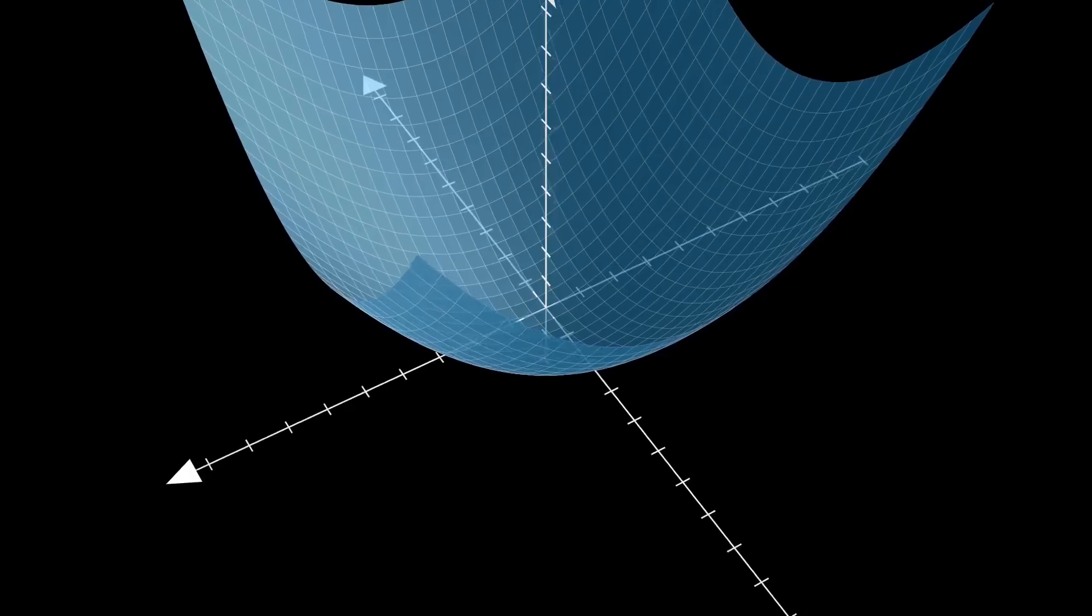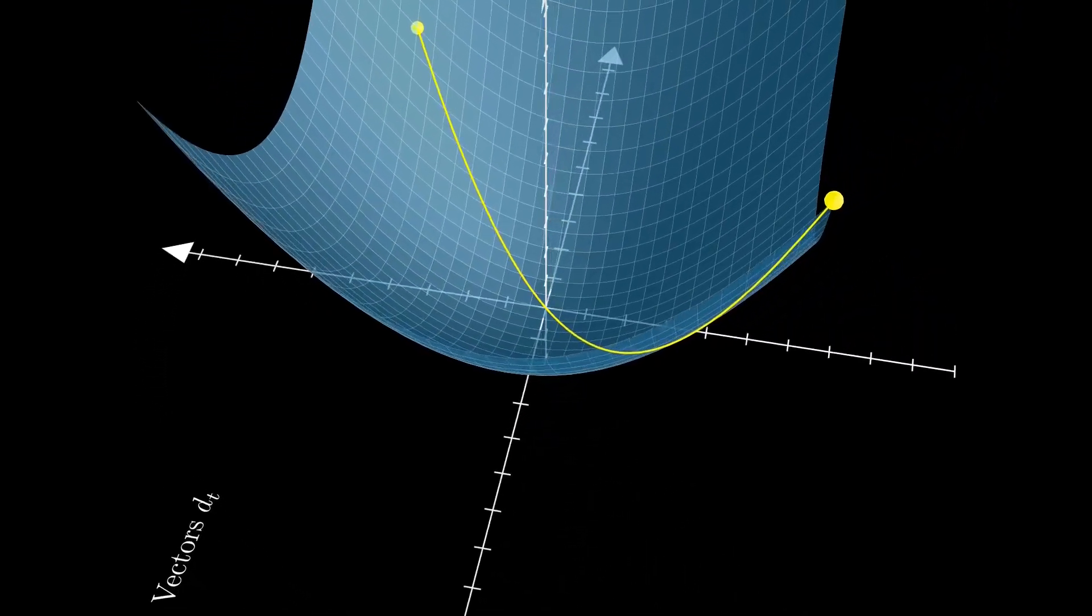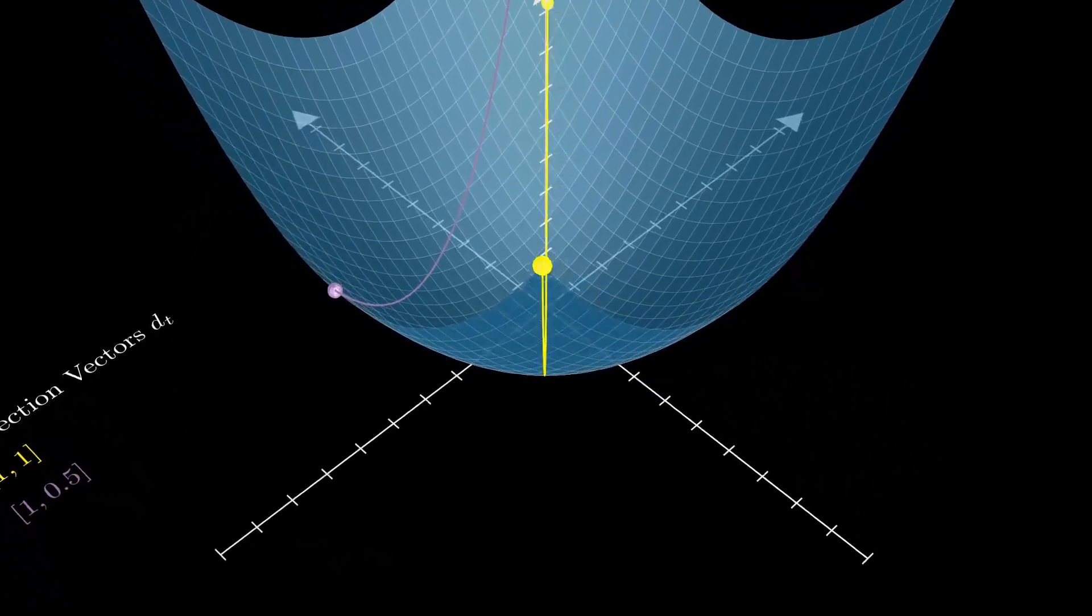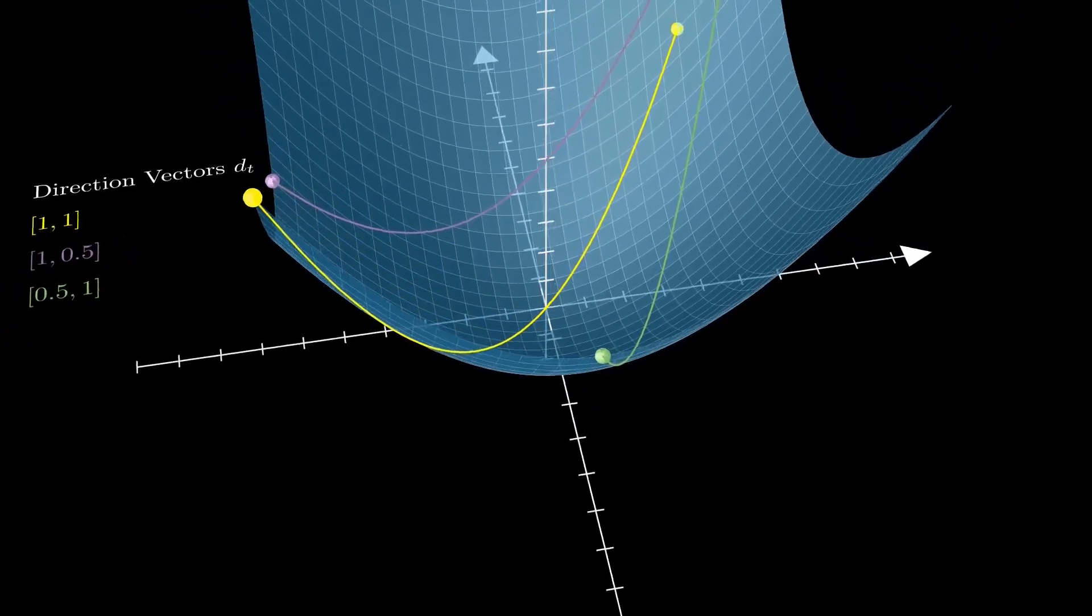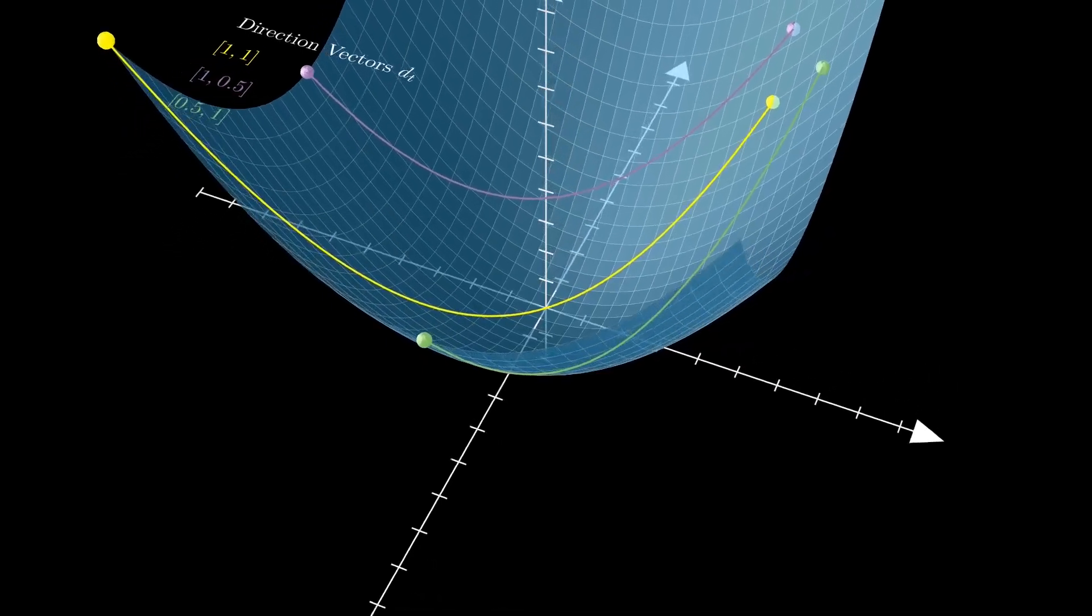As you can see in this plane, we started from three different points, each with different directions. In each case, we are performing one-dimensional line search. Think of it this way: this is like taking a one-dimensional slice of the plane along a given direction.